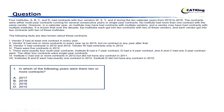However, in a calendar year, an institute may have had contracts with multiple vendors — meaning A can have a contract in a single year with W as well as with X, and same goes for other institutes. Also, a vendor may have had contracts with multiple institutes. It is known that over the decade, each institute got into 2 contracts with 2 of these vendors, and every vendor also had 2 contracts.